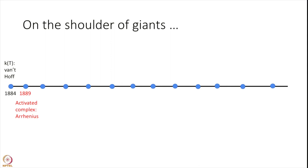1889, Arrhenius wrote a seminal paper, one and a half page paper that I will show you in the second module. Powerful paper. And that paper is the first paper that postulated the idea of a transition state.